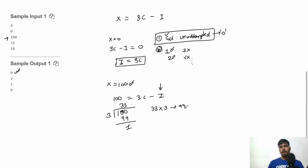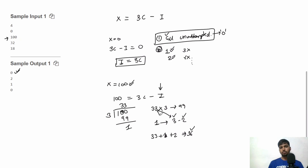That one extra mark can be written as 3 minus 2, meaning one correct and two incorrect. So chef attempted 33 plus 1 plus 2 = 36 problems total, of which 34 are correct (34 × 3 = 102) and two are incorrect (subtract 2), giving 100. So the minimum number of incorrect problems is 2 and we output 2.